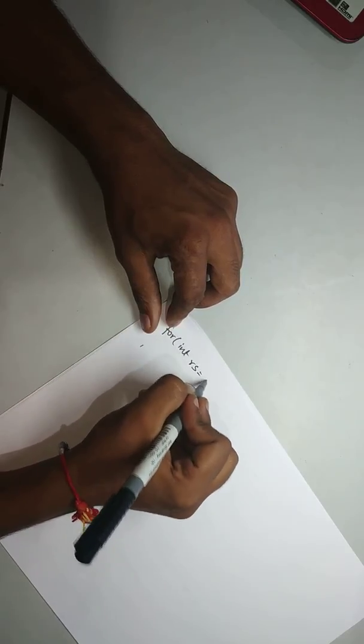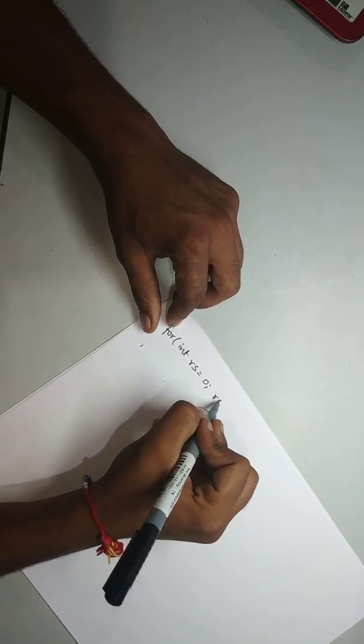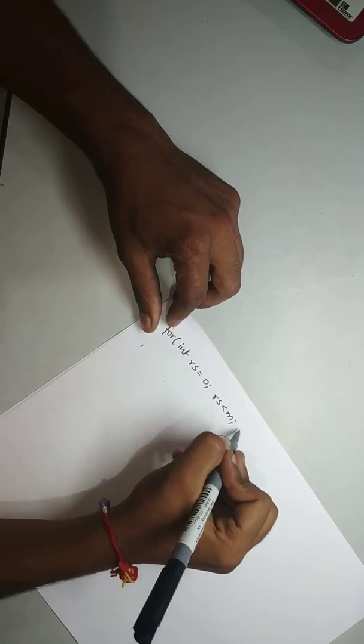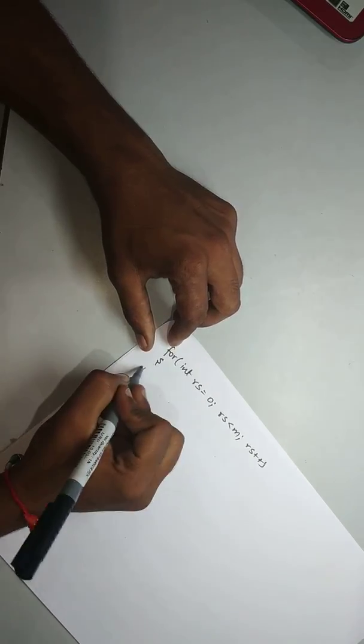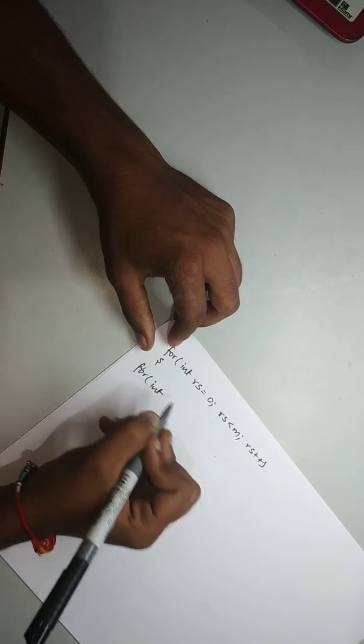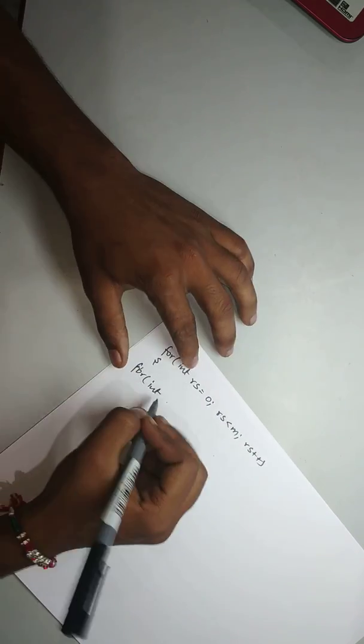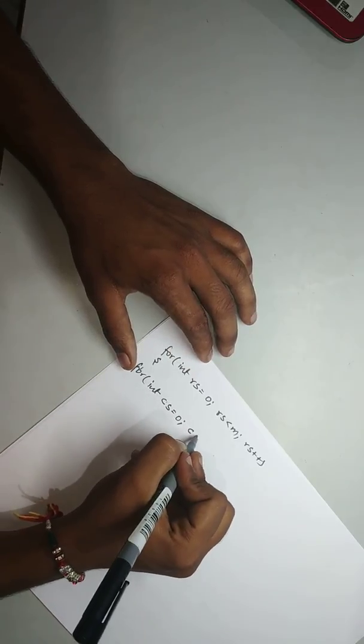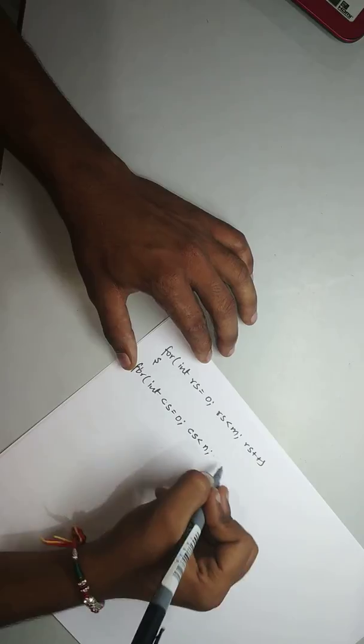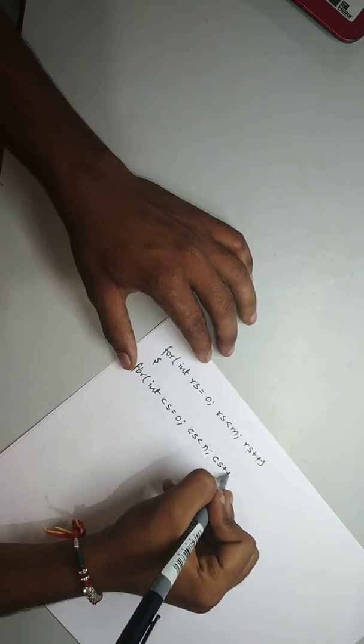We can say for int r is equal to 0, less than m, r is plus plus. After that for int c, selection of column. This is for selection of column. Plus plus.